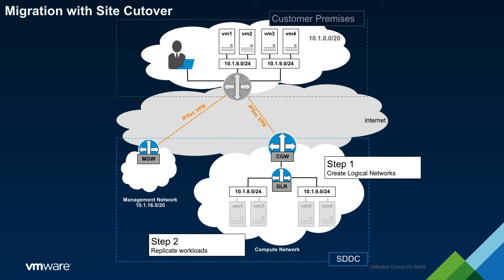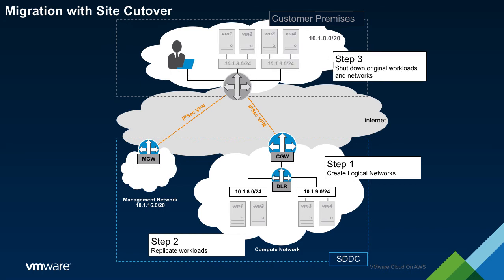Once the workloads have been fully replicated, the site cutover process may begin. The first step of this process is to shut down all of the resources within the on-prem environment. Next, workloads within the SDDC will be powered on and made active.